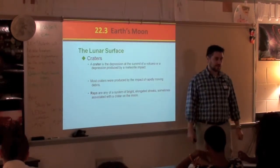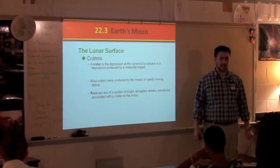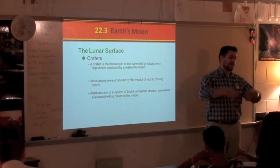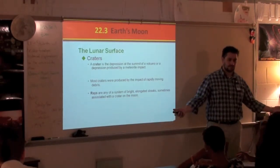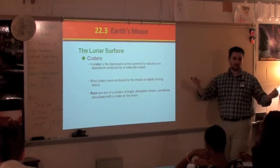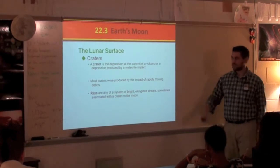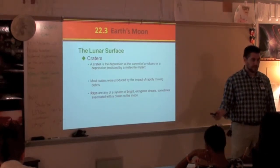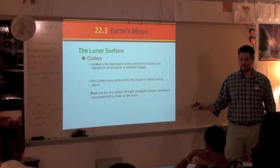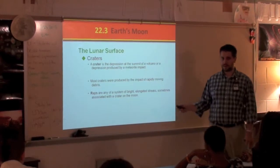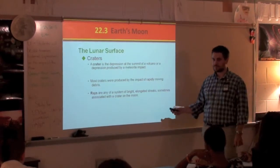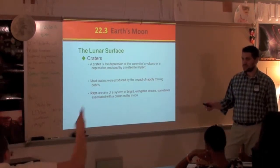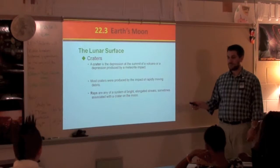Something hits the earth, it makes a mess, throws out stuff that goes into streaks — you get rays. So crater and rays are pretty simple to understand. It just shoots out into streaks.